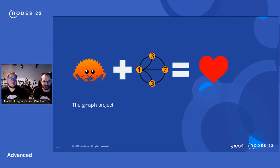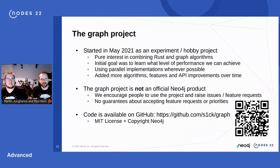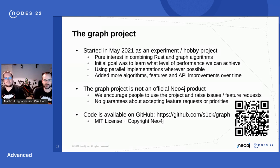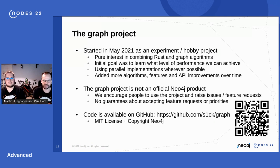Let's talk about the graph project, which is the main focus of our presentation. The project started last year in May as a side experiment hobby project by the two of us. Our initial motivation was to figure out how fast we could make graph algorithms in Rust. We made ourselves the constraint that everything we implement, if possible, should run in parallel — creating graphs, running algorithms, and so on. It's now available for others to use, though it's not an official Neo4j product.